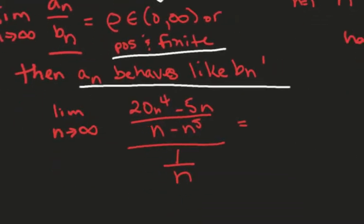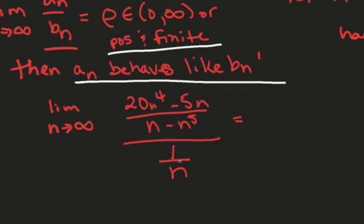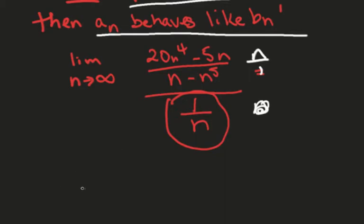So, now you could plug in as it sits right now in this limit of a sub n over b sub n. But you're going to have to clean this up anyway. You might as well clean this up. So, how do you get rid of this 1 over n on the bottom? What do I have to do to do that? You multiply by its reciprocal. Good. So, if I multiply by n over 1, that's fine. And when you do so, you're going to get limit as n approaches infinity of 20n to the 5th minus 5n over n minus n to the 5th. Do you agree with that statement?